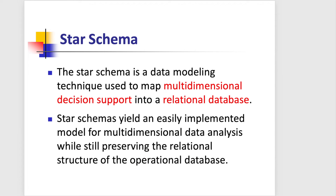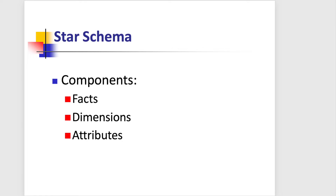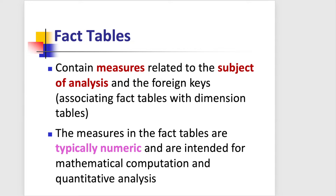The star schema is a type of data modeling technique that we can use for multi-dimensional data modeling — for example, to develop a data warehouse. Each star schema has three main components: facts or fact tables, dimension tables, and attributes. A fact table contains the measures that are related to the subject of our analysis, which are usually numeric.